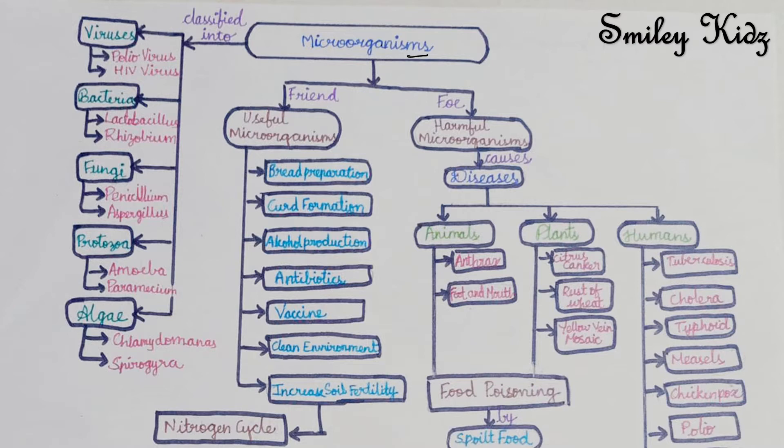Microorganisms - what are microorganisms? The living organisms which can only be seen with the help of a microscope are called microorganisms. These microorganisms are also known as microbes.